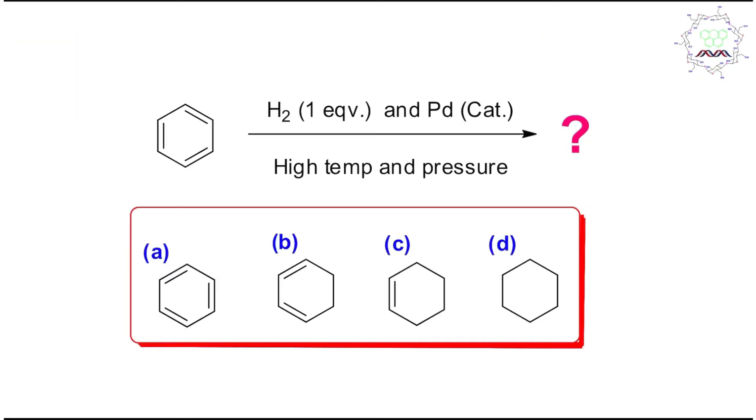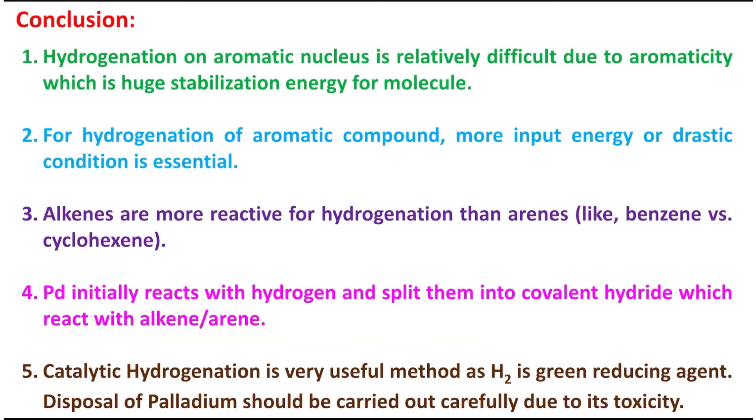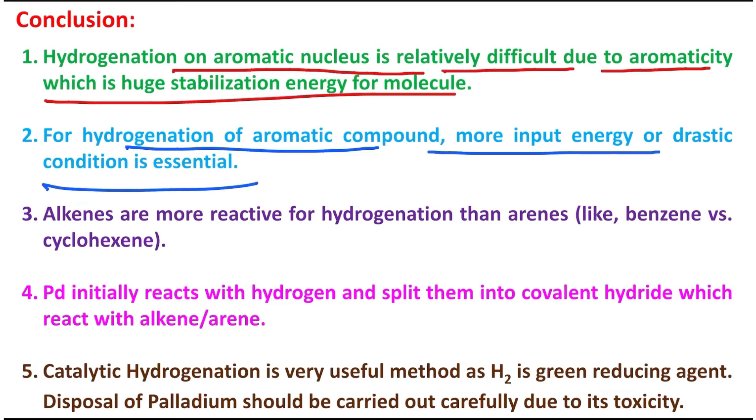What is the answer? The answer is benzene. What do you have learned today? That hydrogenation on aromatic nucleus is relatively difficult due to aromaticity, which is huge stabilization energy for a molecule. For hydrogenation of aromatic compounds, more input energy is needed, which is provided in the form of drastic conditions: high pressure, high temperature, etc. Alkenes are more reactive for hydrogenation compared to arenes like benzene versus cyclohexene.